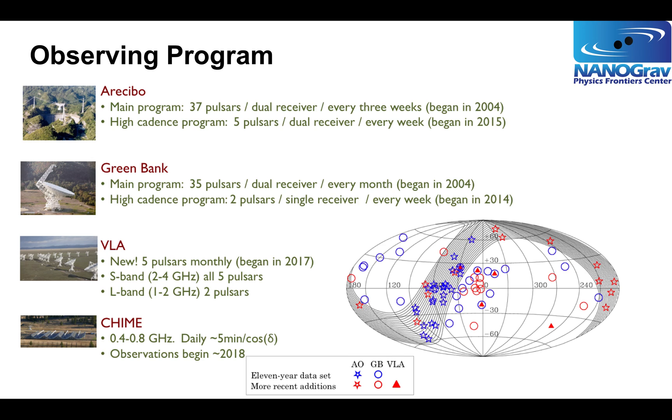We've also recently begun observations with the VLA. The VLA has a particularly good high-frequency receiver setup that complements what's available at Green Bank. It's also further south, so it allows us to observe pulsars that we can't see from either Green Bank or Arecibo. Finally, in 2018, we expect to start observing with CHIME, the Canadian telescope in Penticton, British Columbia. It's going to be a low-frequency observing program complementary to what we do at Green Bank and Arecibo.